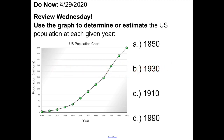All right, so 1850 — we look at the graph, here's 1850. I've got about 26 million. So a total population of 26 million in 1850 — maybe five to ten times the population of Massachusetts, though I don't know that number off the top of my head.